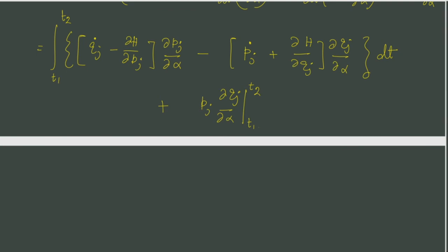Now del Qj del alpha, if you remember it was one of our independent quantities which by definition vanishes at the end point. So as such this term goes to zero because this partial derivative is zero at T1 and also at T2.